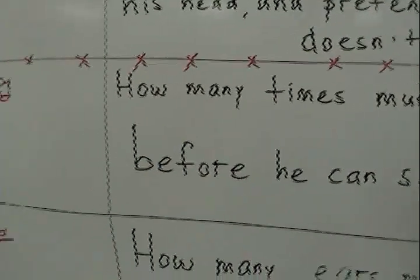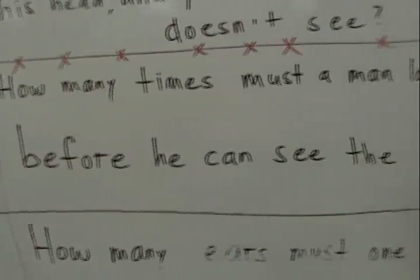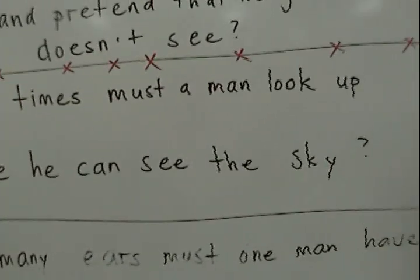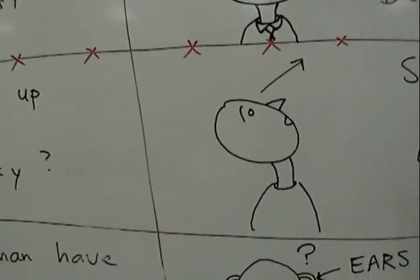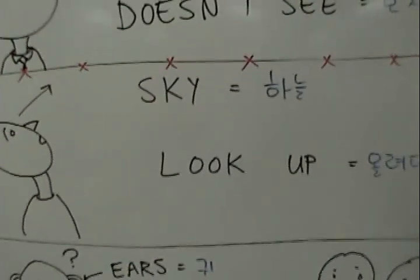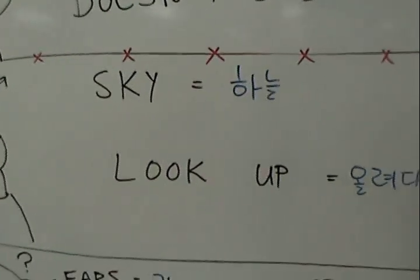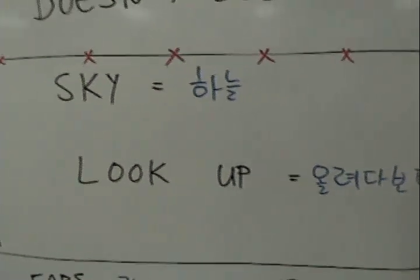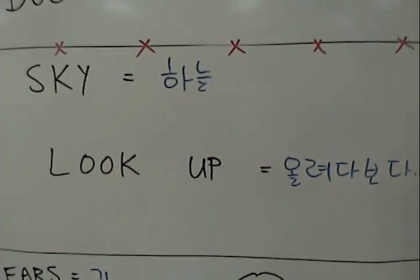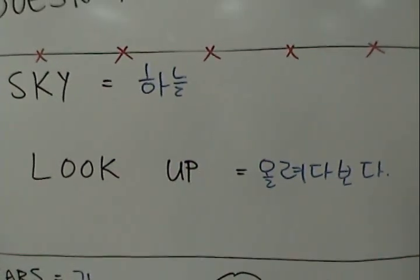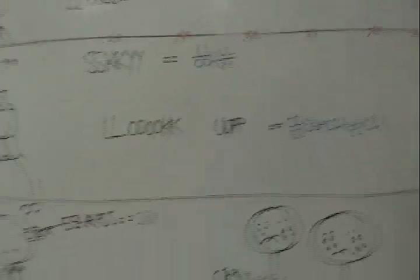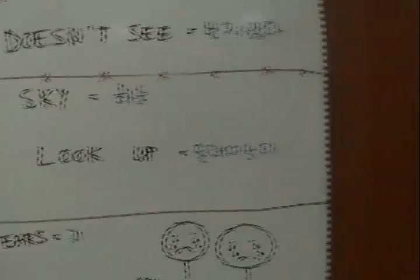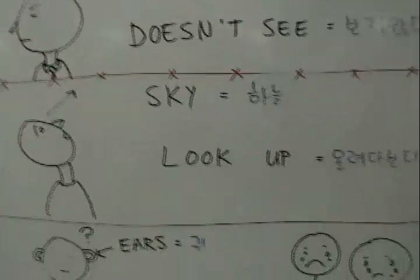Here is the English: 'How many times must a man look up before he can see the sky.' And in the last column there is a picture — first of a man looking up, then the meaning of 'sky' which is 'hanul,' and the meaning of 'look up' which is 'oljodaboda.'